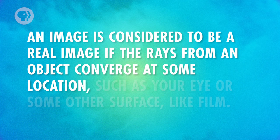And not all images are the same. An image is considered to be a real image if the rays from an object converge at some location, such as your eye or some other surface, like film. Real images can be projected onto screens because light rays from an object are actually traveling there.